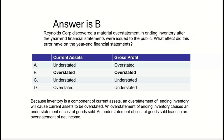Inventory is a component of current assets, so an overstatement of ending inventory causes current assets to be overstated. The understatement of cost of goods sold leads to an overstatement of gross profit, net income, retained earnings, and total stockholders' equity. The answer is: overstatement of current assets and overstatement of gross profit.